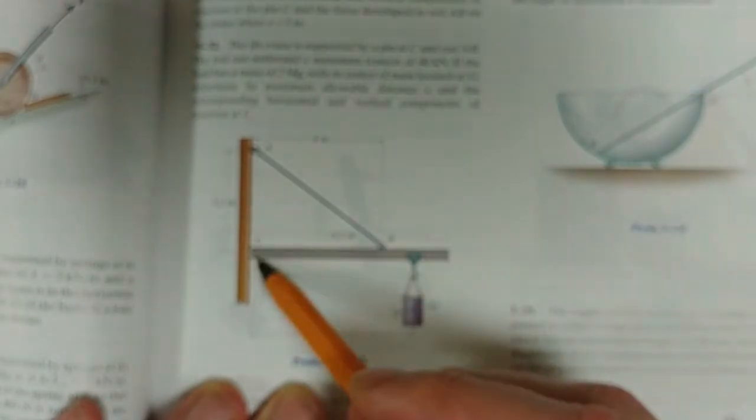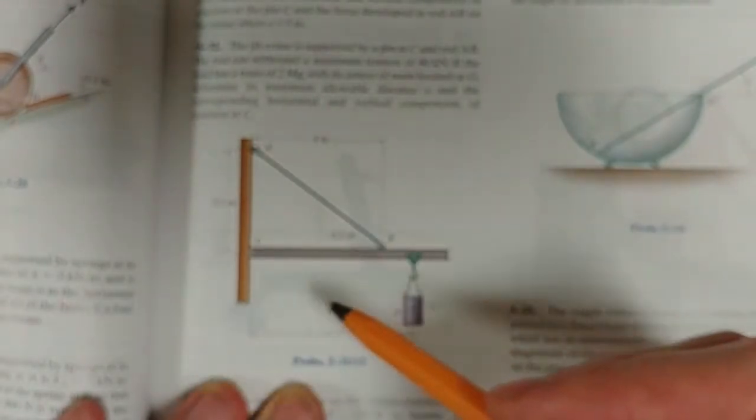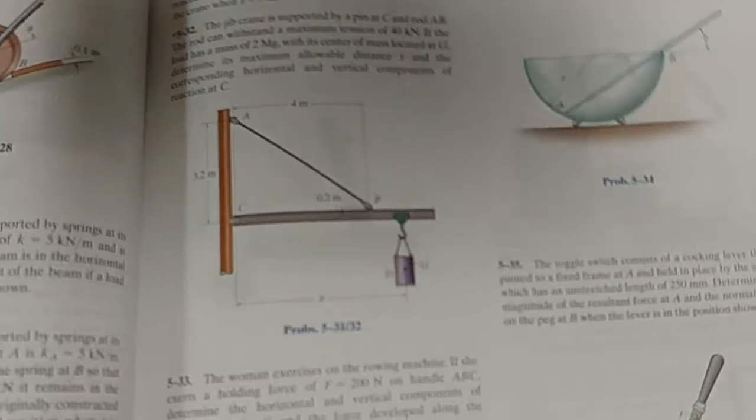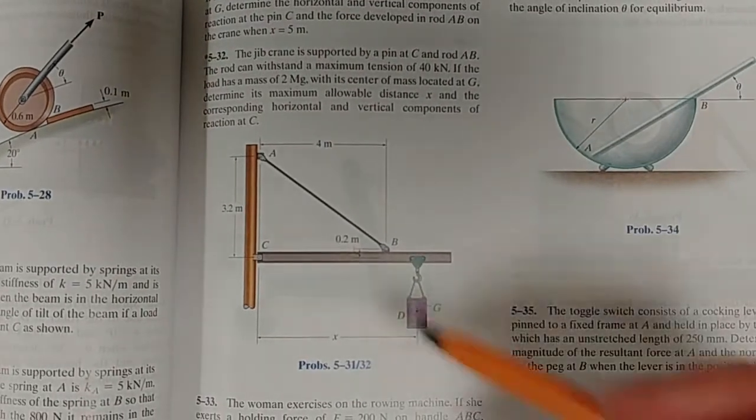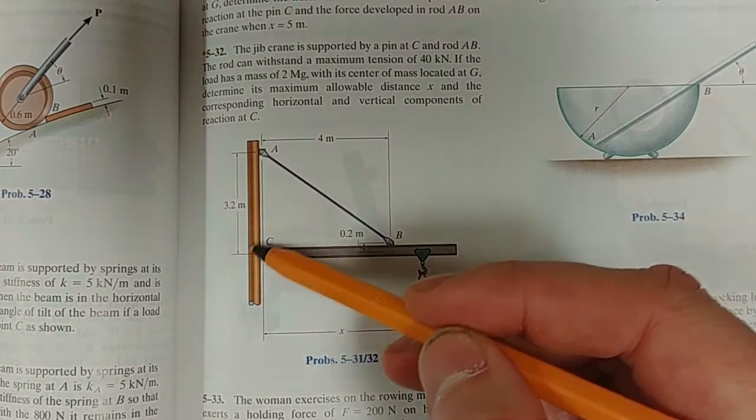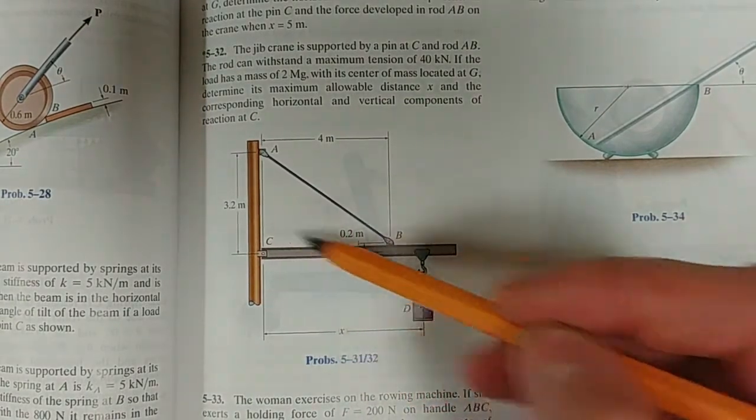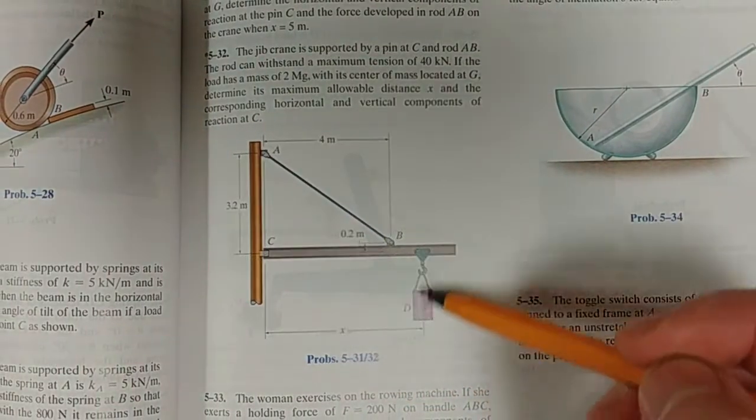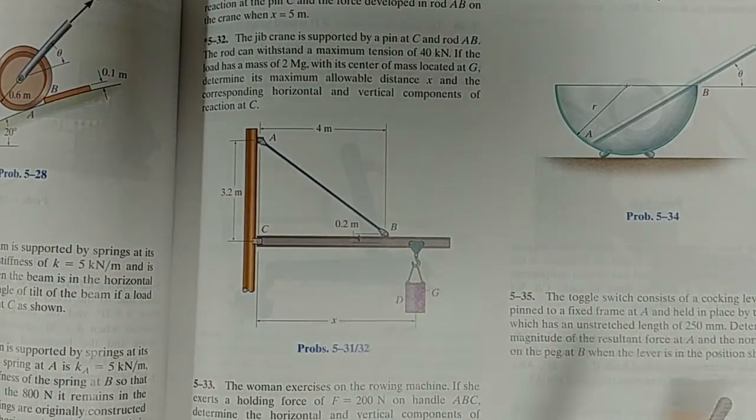But if we didn't have this connection here from A to B, this rod, then this would just simply fall down because we don't have a connection which is resisting the moment which is caused by this weight.